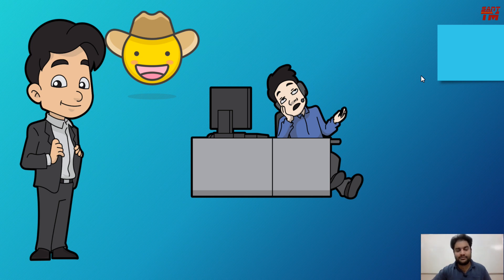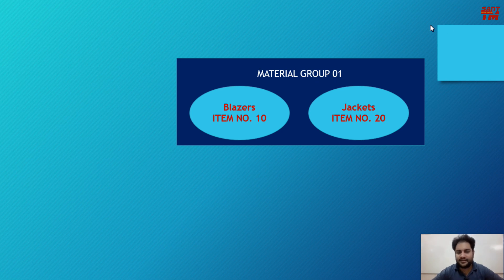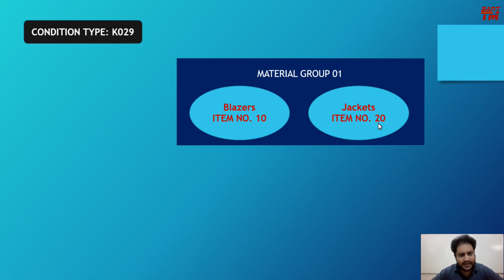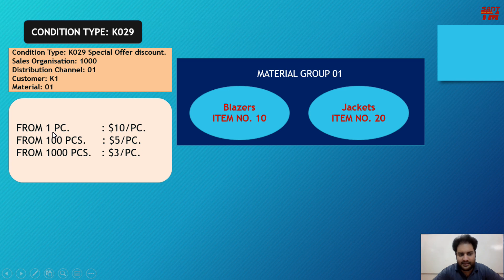In the SAP system, the vendor has created a material group where blazers are item number 10 and jackets are item number 20. Condition type K029 exists in the system with a condition record: sales organization 1000, distribution channel 01, customer K1, material group 01. The pricing scale is: 1–99 pieces at $10 per piece, 100–999 pieces at $5 per piece, and 1000+ pieces at $3 per piece.